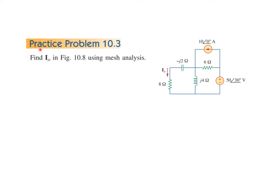Let's look at practice problem 10.3. We have to find current i-naught — this is the current i-naught — using mesh analysis. So let's proceed.